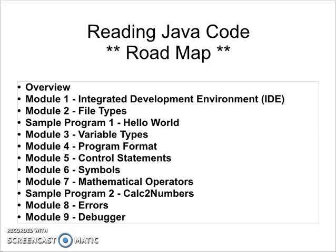Module 5: we'll talk about Control Statements. Those statements are the things that make the programs run — whether it's a while loop, a for loop, a switch statement, or an if statement. These are the conditional things that happen within a program, and we call those control statements.